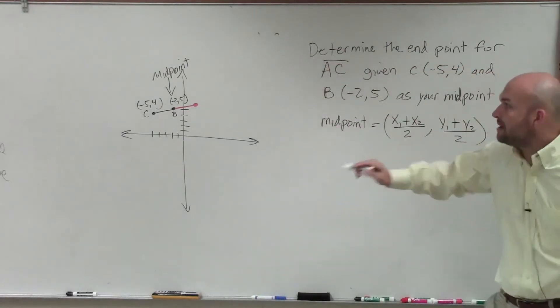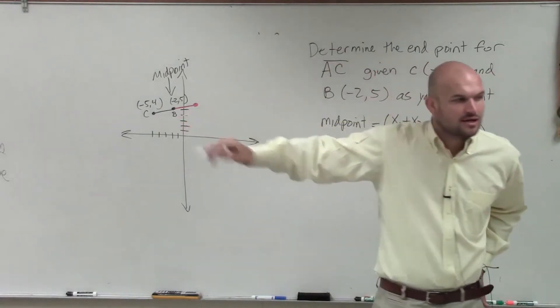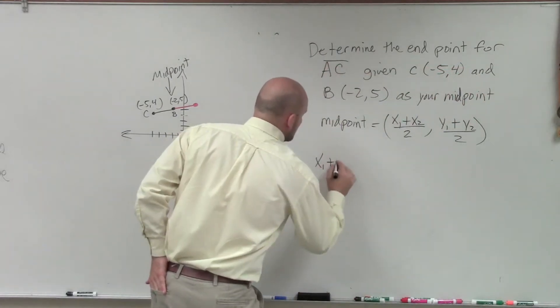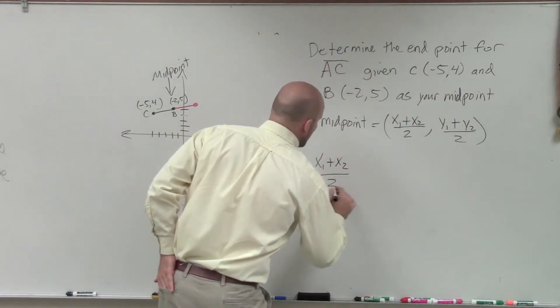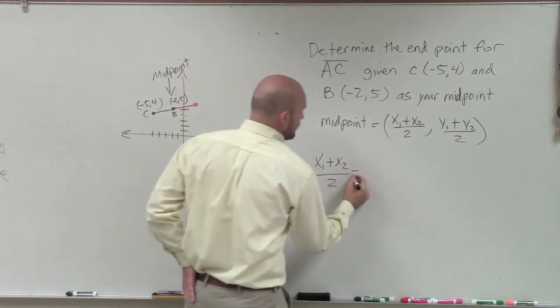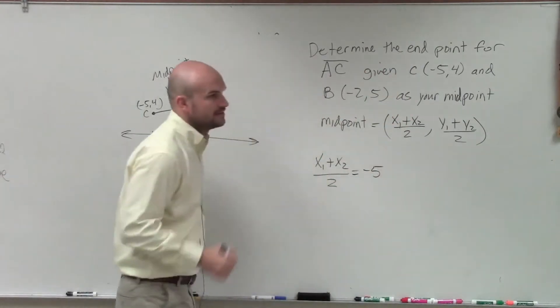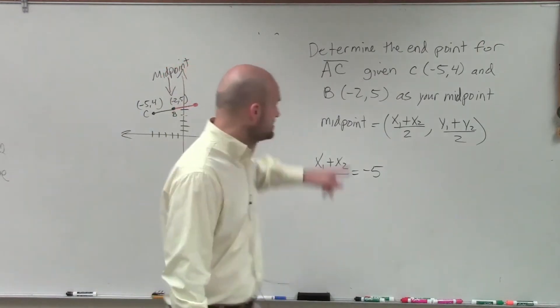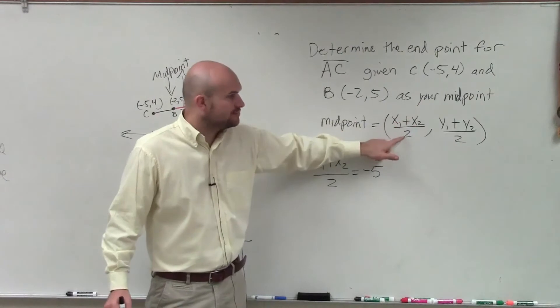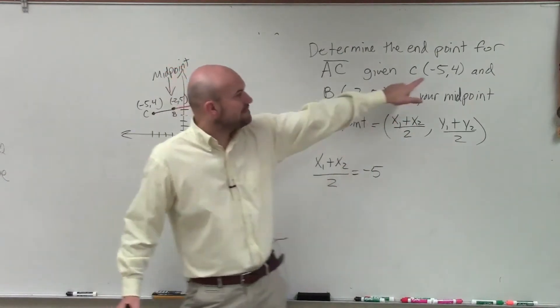So when we're looking at this, we want to find out what this midpoint is. So what I can say, ladies and gentlemen, is x1 plus x2 divided by 2 equals my x-coordinate of my midpoint, which is negative 5.